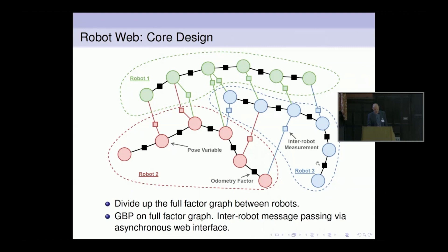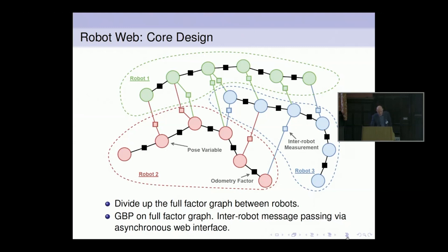Robot two owns all of the measurements made by its sensors and all of its pose variables. When we do message passing, all of the passing within one robot's dotted line is done on that robot's own processor. But for messages that need to go across to another robot, we have a web-like interface. Because optimization in GBP can be asynchronous — it doesn't really matter what order you send messages — each robot just presents all of its latest outgoing messages, something like a web page.